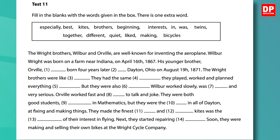The Wright brothers, Wilbur and Orville, are well known for inventing the aeroplane. Wilbur Wright was born on a farm near Indiana on April 16, 1867. His younger brother, Orville, was born four years later in Dayton, Ohio on August 19, 1871. The Wright brothers were like twins. They had the same interests. They played, worked and planned everything together. But they were also different. Wilbur worked slowly, was quiet and very serious. Orville worked fast and liked to talk and joke. They were both good students, especially in mathematics, but they were the best in all of Dayton at fixing and making things. They made the finest kites, and making kites was the beginning of their interest in flying. Next, they started repairing bicycles. Soon they were making and selling their own bikes at the Wright Cycle Company.